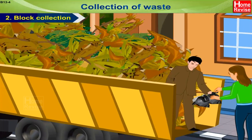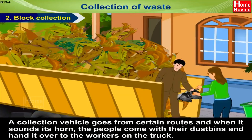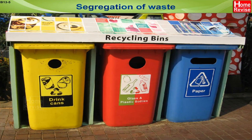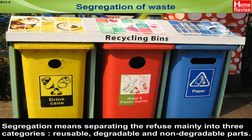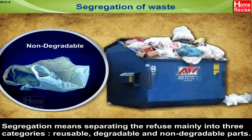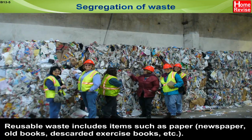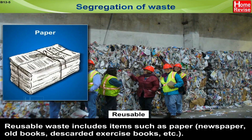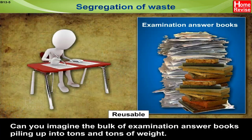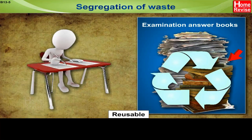Block collection is another method where a collection vehicle goes along certain routes. Segregation of waste means separating the refuse mainly into three categories: reusable, degradable and non-degradable parts. Reusable waste includes items such as paper — like newspapers, old books, discarded exercise books, etc. The bulk of examination answer books can pile up into tons and tons of weight, and all such paper can be recycled, which is the best part.